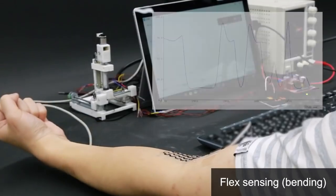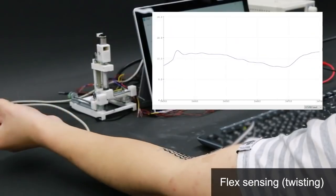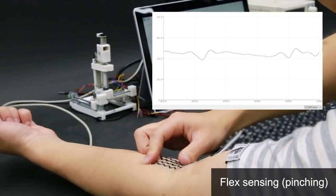Printed circuits can be used to sense the bending, twisting, and pinching of the arm.